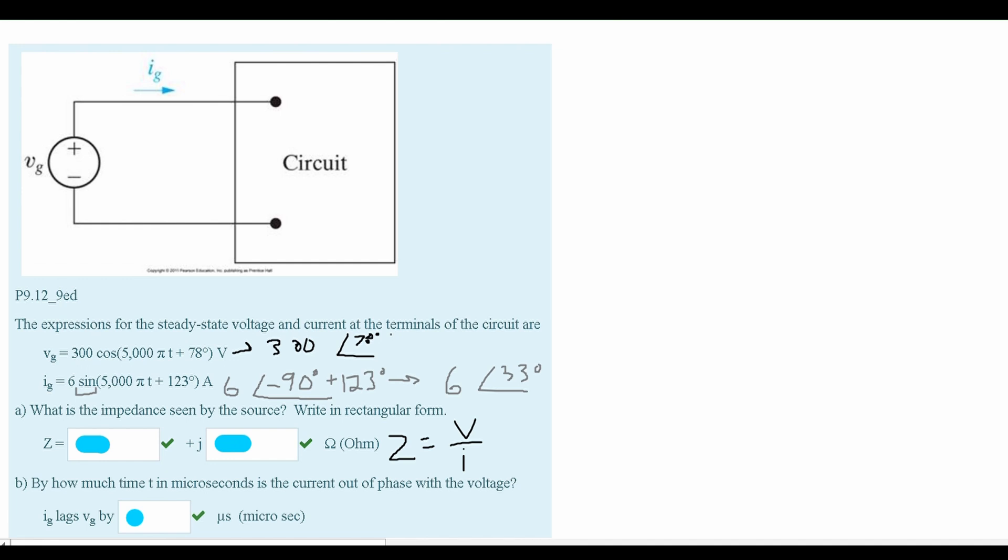Now these are both in polar form, and that's good because we need them in polar form to divide them. We're going to write our voltage over our current. When we divide, we divide the real numbers and subtract the angles. This gives us 50 and subtracting 33 from 78 gives us an angle of 45 degrees.